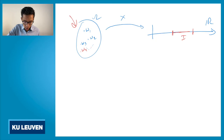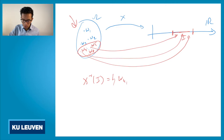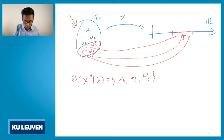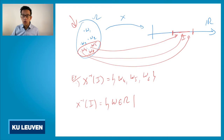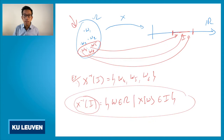I can move in the opposite direction: I can ask which elements in the universe omega will result in a value for the random variable X that belongs to this set I. For example, assume omega4, omega5, omega6 are all mapped into values that lie in the set I. In that case, I call this x⁻¹(I) — it equals {omega4, omega5, omega6}. In general, x⁻¹(I) contains all elements omega in the universe for which x(omega) is an element of I.